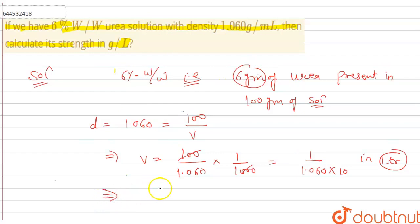So our answer will be 6 gram upon liter, that is 1 upon 1.060 into 10.